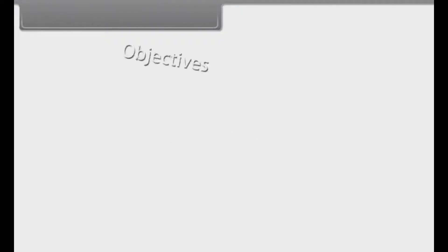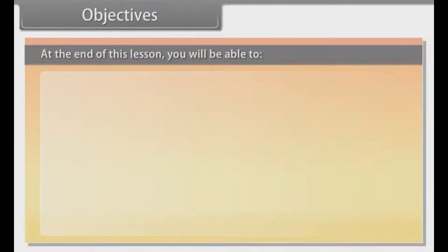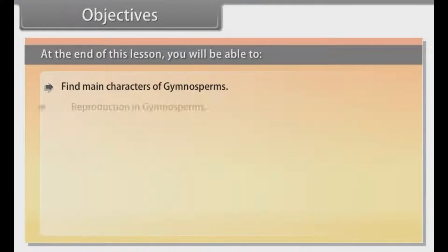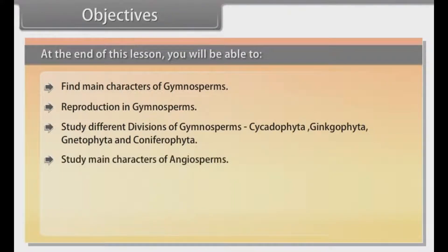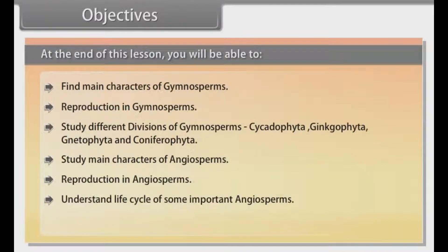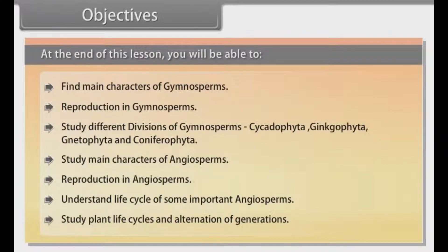Objectives: At the end of this lesson you will be able to find main characters of Gymnosperms, study reproduction in Gymnosperms, study different divisions of Gymnosperms — Cycadophyta, Ginkgophyta, Gnetophyta and Coniferophyta — study main characters of Angiosperms, reproduction in Angiosperms, understand life cycles of some important Angiosperms, and study plant life cycles and alternation of generations.